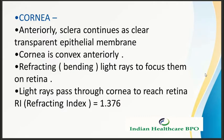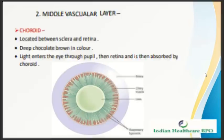The cornea is the anteriorly clear transparent epithelial membrane where the sclera continues. The cornea is convex anteriorly, refracting light rays to focus them on the retina. Light rays pass through the cornea to reach the retina. The refractive index of the cornea is 1.376.